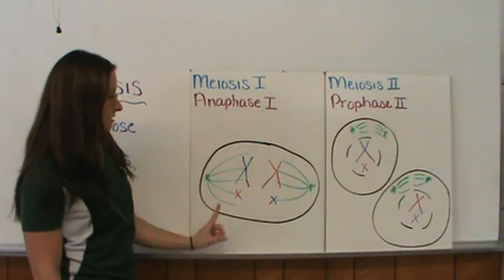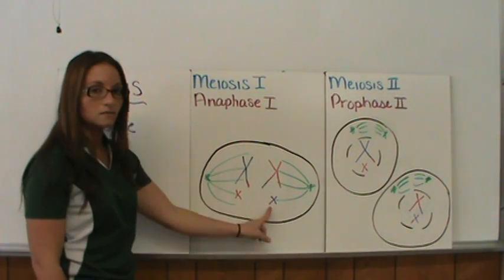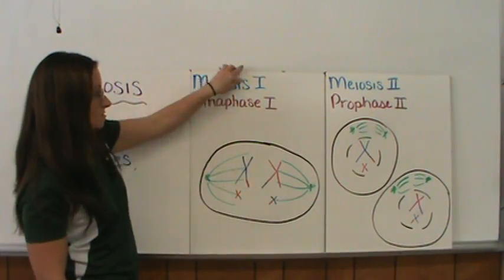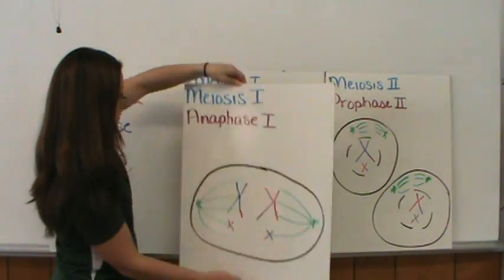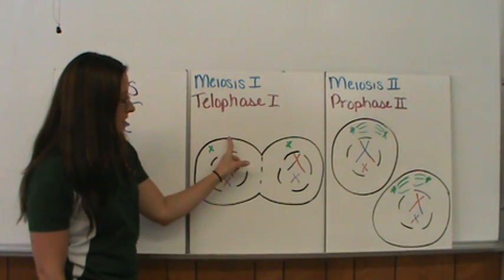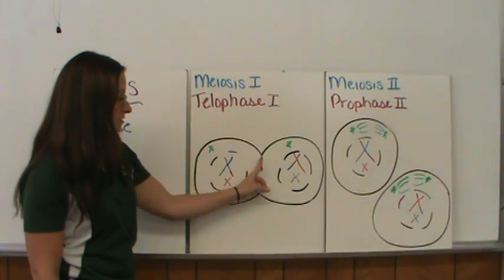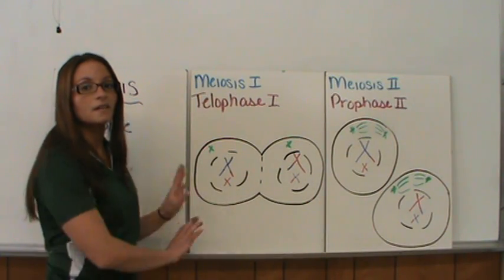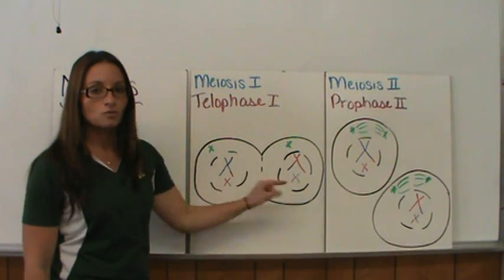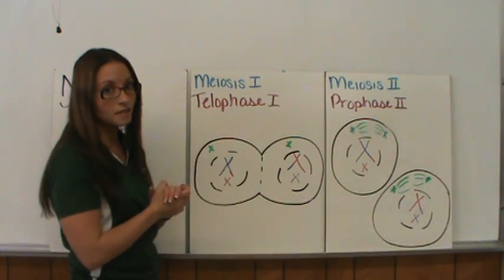Once that happens, we move on to anaphase. In anaphase, the chromosomes move to opposite sides of the cell — two moving to one side and two moving to the other. Then in telophase, a new nucleus forms and the cleavage furrow forms in animal cells. The cells start to split and fully split in cytokinesis. So now we have two chromosomes in one cell and two chromosomes in another cell, with our DNA cut in half so far.